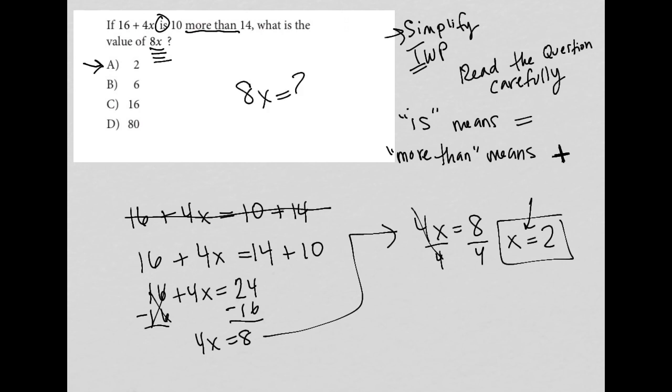I just suggest you either underline it or write it down on the page, write 8x equals question mark. And that just helps your brain to realize I'm not solving for x here. I'm actually solving for 8x.